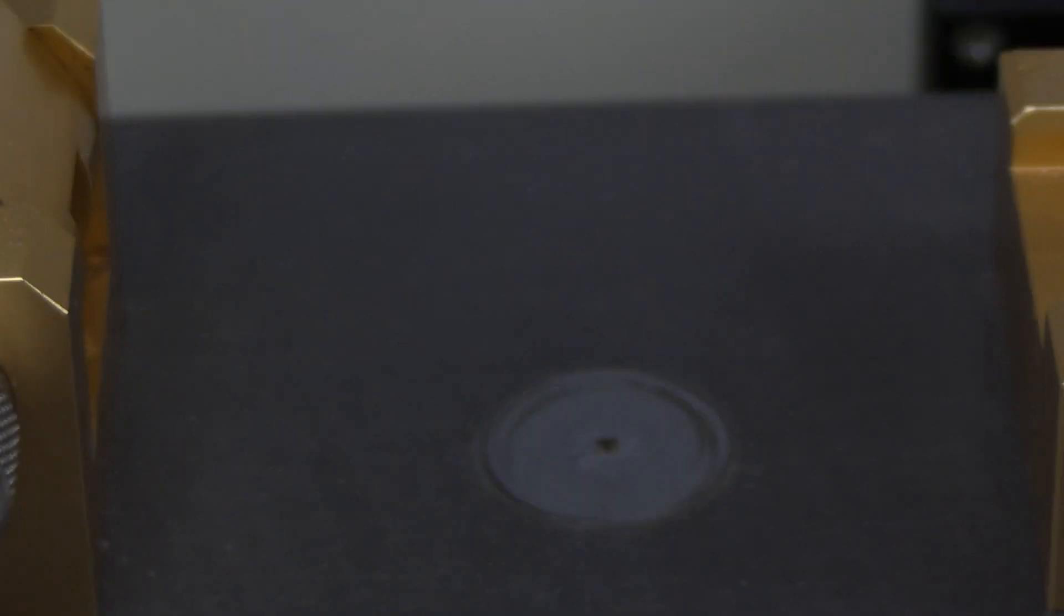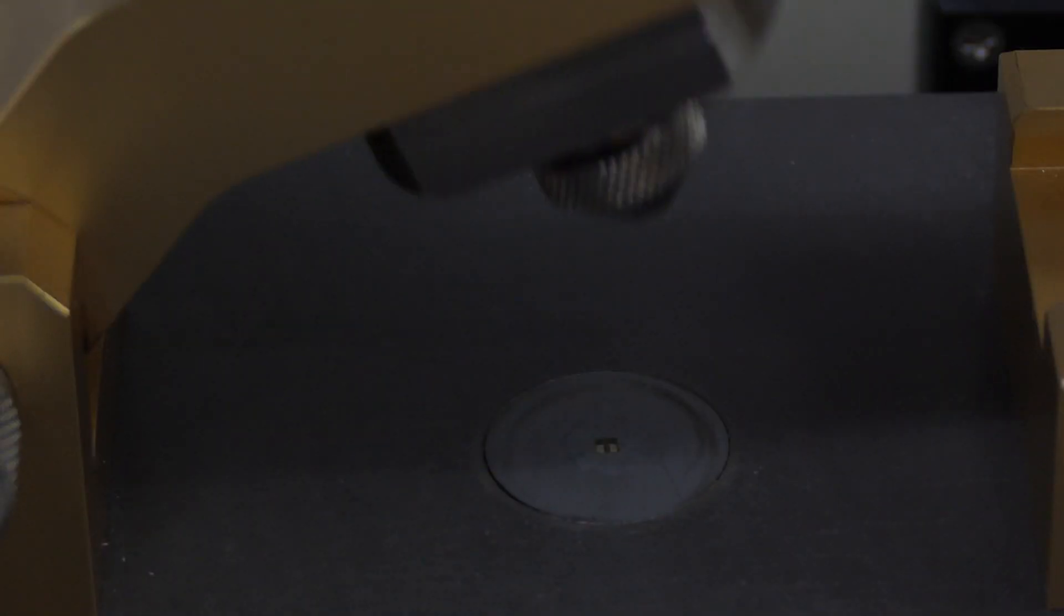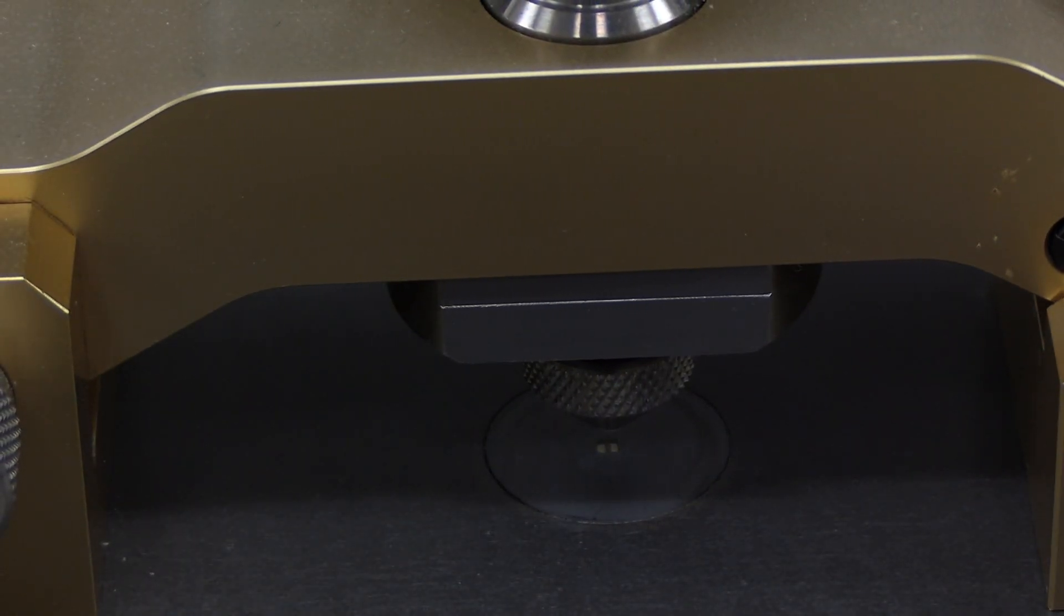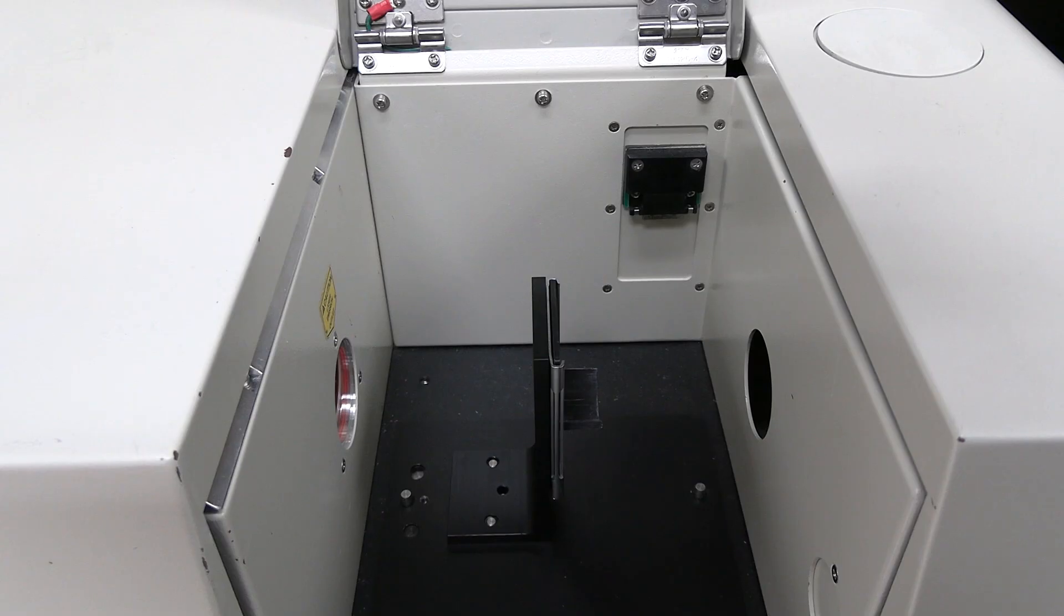Before performing the background measurement, ensure there is no sample in the sample chamber. If using the ATR, there should be no sample on the sample window, and the anvil should be retracted away from the sample window. If using the plate holder, there should be no salt plate on the holder.